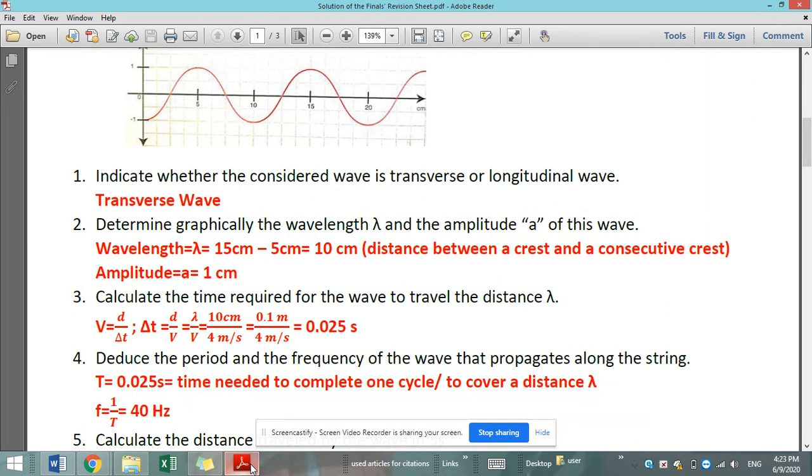So as long as the wave propagates at a constant speed, we can apply the formula v equals d over delta t. And thus delta t by doing cross multiplication, delta t is d over v.